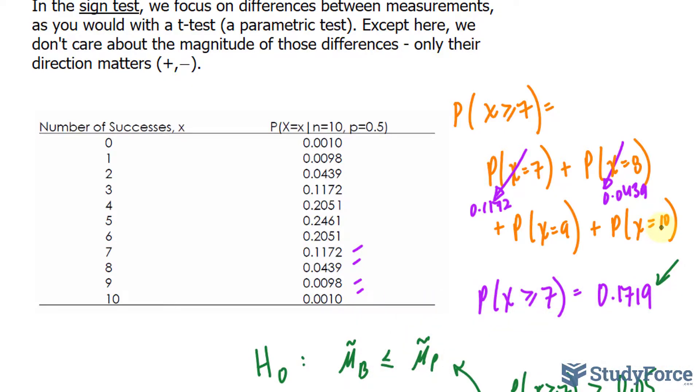And one other thing, if the alternative hypothesis was written as a two-tail test, remember, we would have to multiply the p-value by 2. Now, ours was written as greater than or less than, so we didn't have this problem.